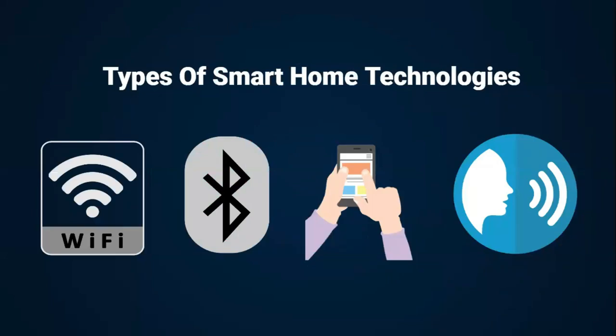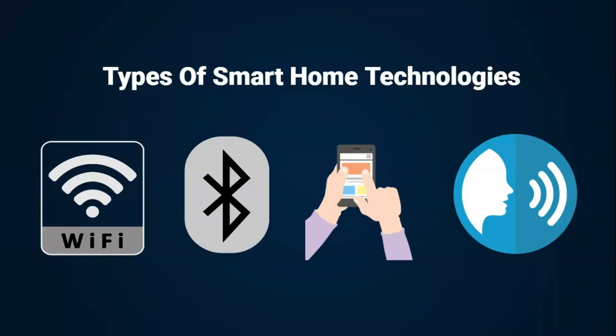Types of smart home technologies. We will elaborate further on Wi-Fi and Bluetooth, but so that you have an idea, smart home technologies can be operated essentially from your smart device — say your tablet or phone — and there is also another method such as voice activation to give that device or appliance orders.